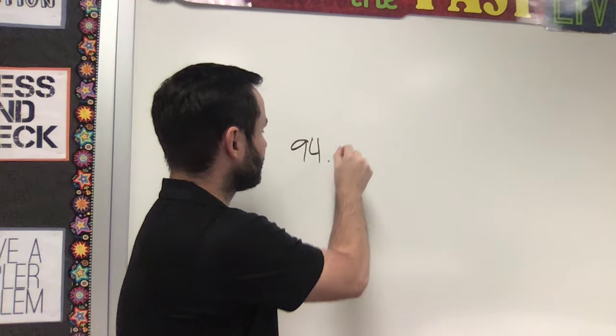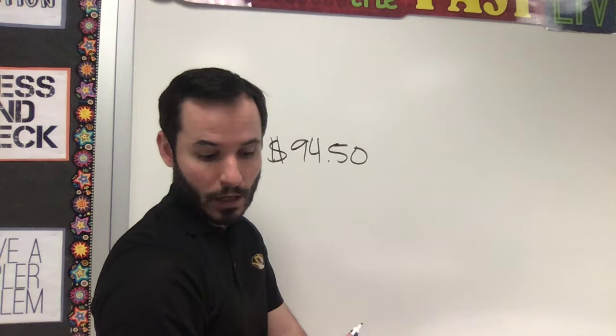It says a moving van rents for $94.50 per day, and a small truck rents for $162 per day. I already have the prices that I want to write down because I'm going to use those prices to find out what the better deal is. So I've got $94.50 for the van and $162 for the small truck.